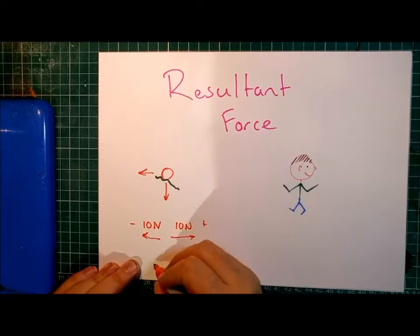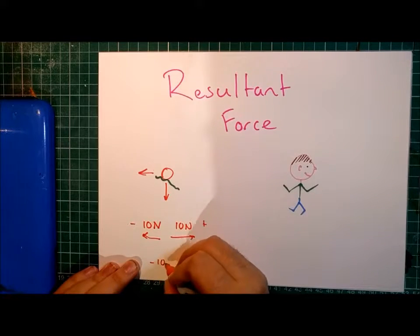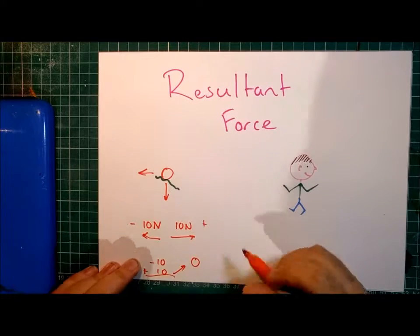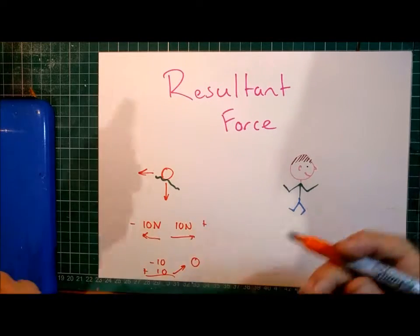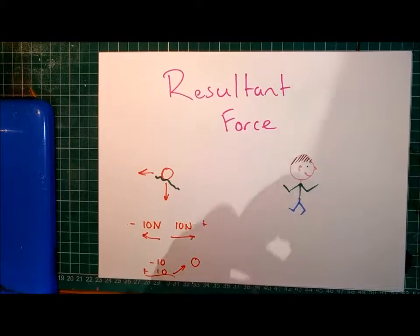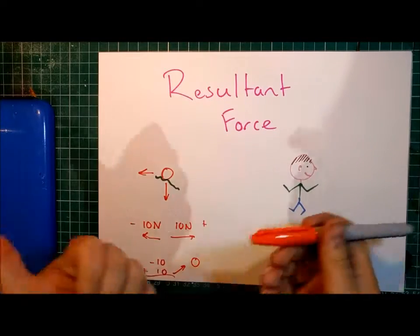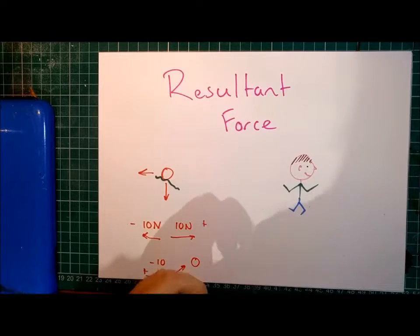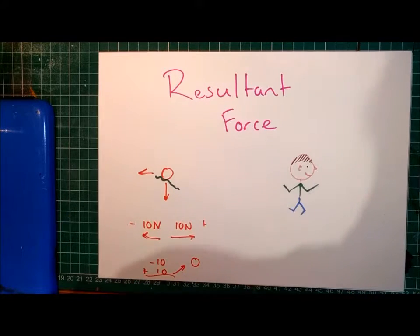So, when you add those two together, you have minus 10 plus 10, and those two added together will get 0. So, in this particular case, there will be a resultant force of 0. It's important to remember that if you have forces acting in opposite directions, then one of them is negative, the other one is positive, and then you add them together to find the resultant force.